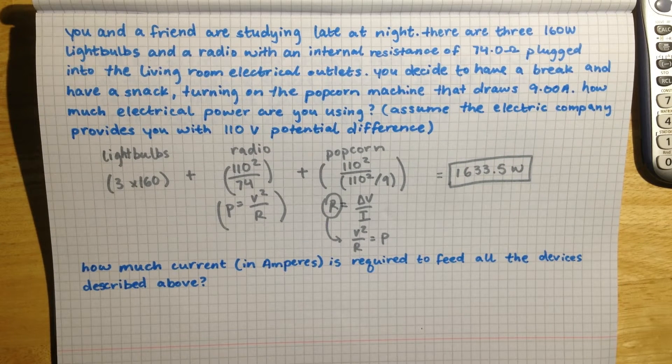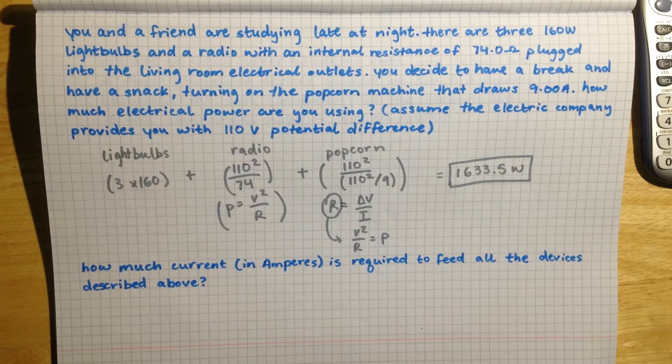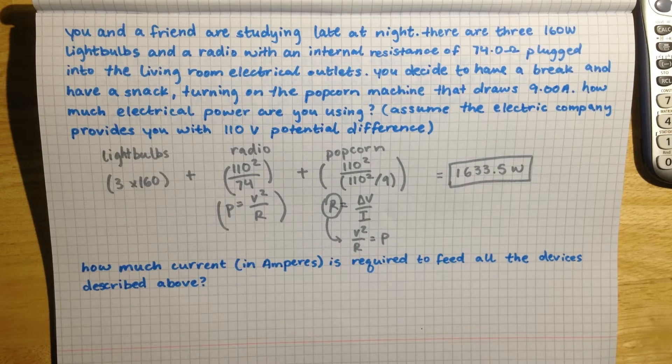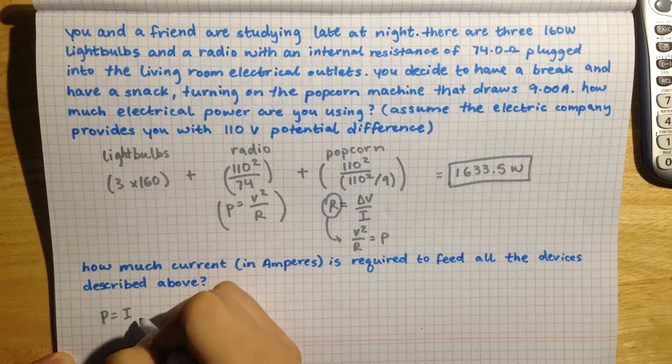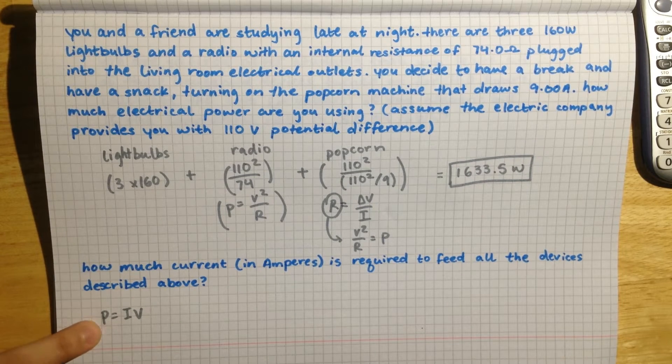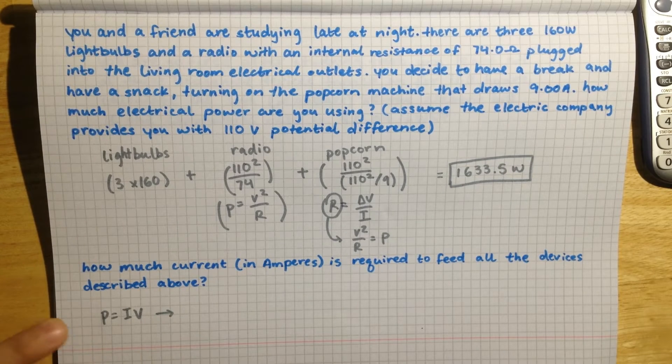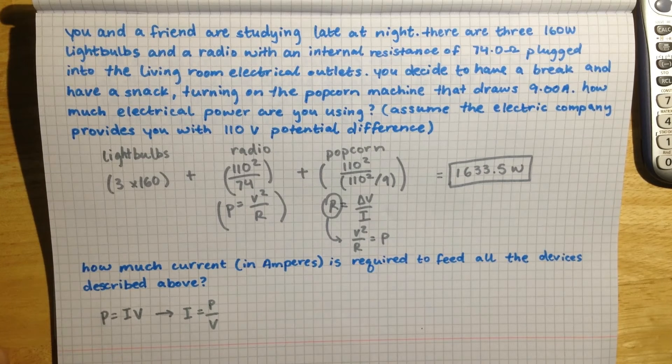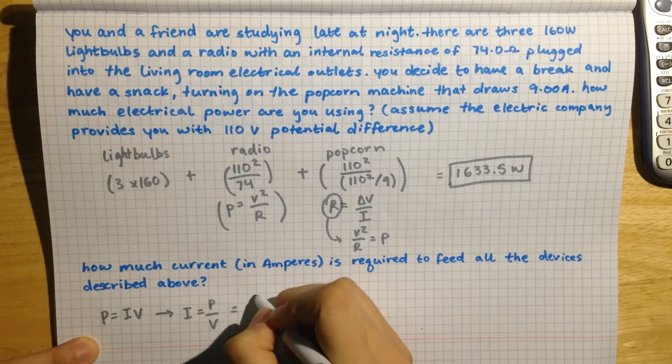So the next part of this question is asking how much current in amperes is required to feed all the devices described above. And so for this we are going to use the equation P equals IV, so power is equal to current times the potential difference which is in volts, and we are going to rearrange that so that it is equaling current. So I equals P over V.